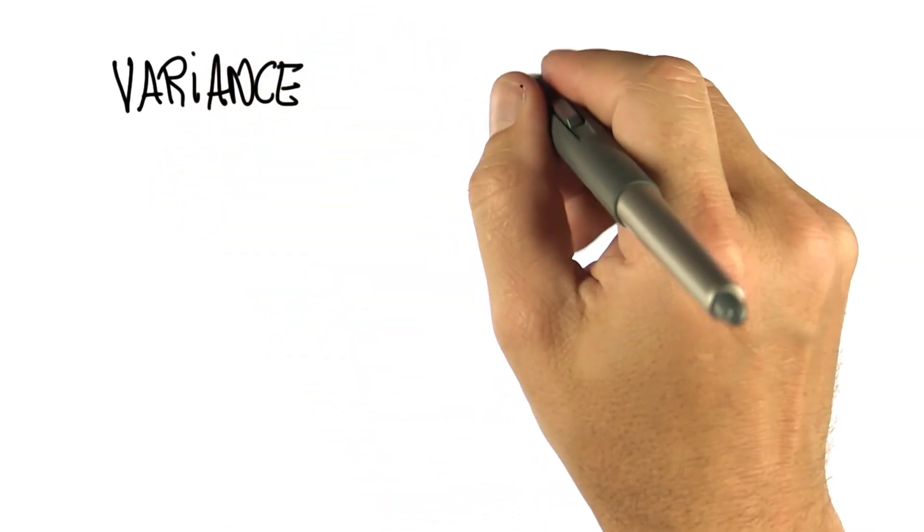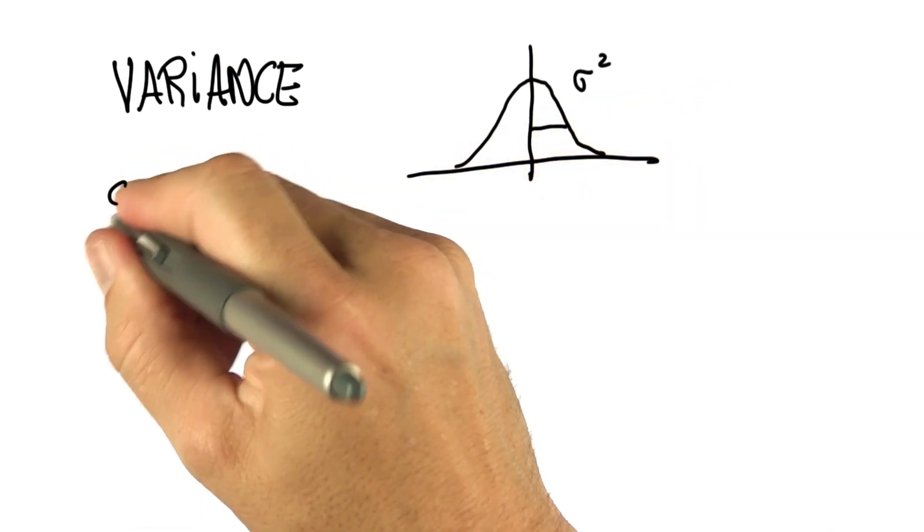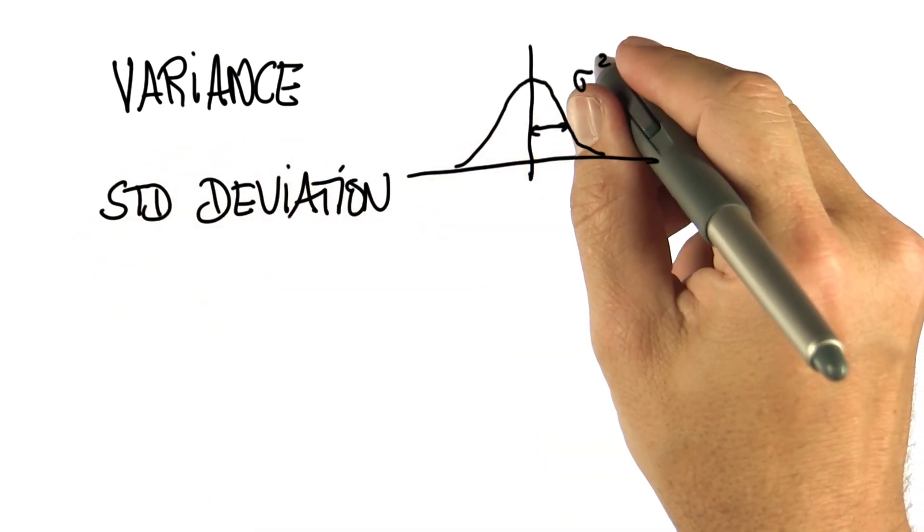You now understand a lot. You understand variance, which is the spread of the data squared. You understand standard deviation, which is the same without the square.